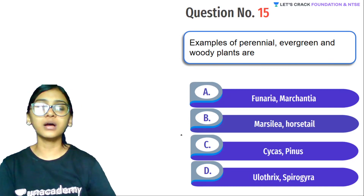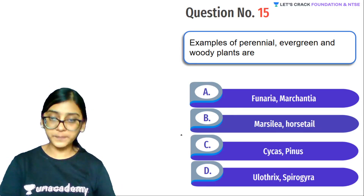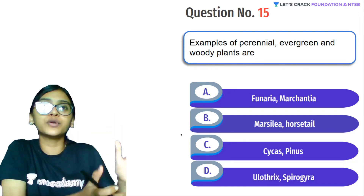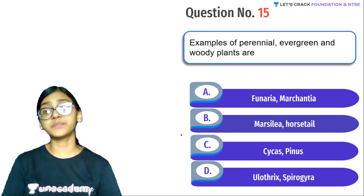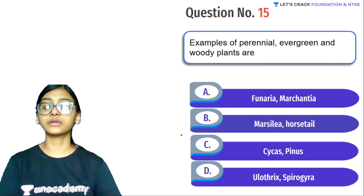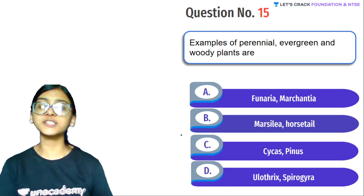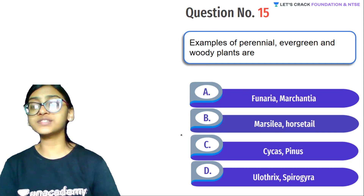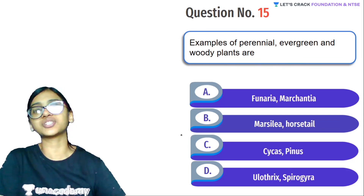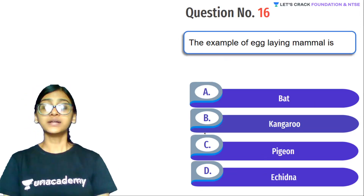Next question: Example of perennial, evergreen, and woody plants. Perennial means living for more than one year. Woody means the tree has a wood-like structure. Options include Funeria, Marchantia, horsetail, Cycas/Pinus, Ulothrix, and Spirogyra. Funeria and Marchantia are Bryophytes. Marchantia and horsetail are Pteridophytes. Cycas/Pinus are Gymnosperms. Since we need a woody perennial evergreen plant, and Gymnosperms have hard wood-like structures, the answer is C (Gymnosperm example like Cycas/Pinus).